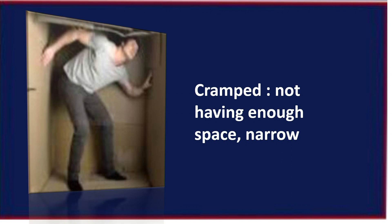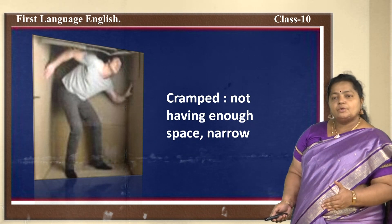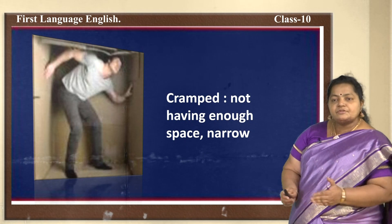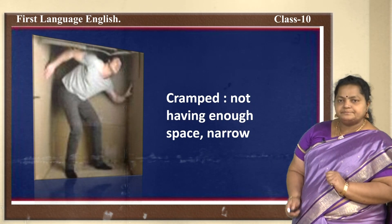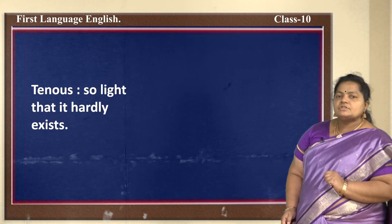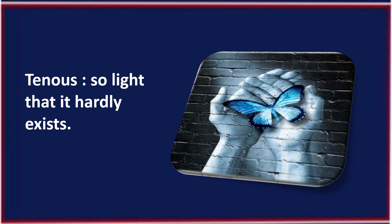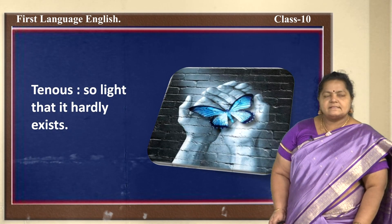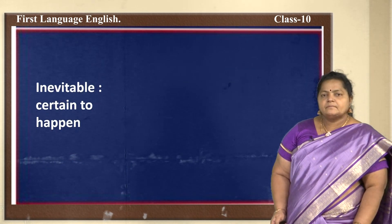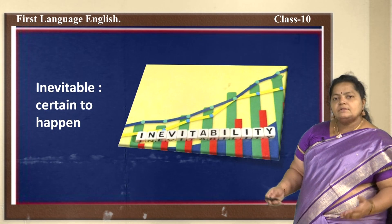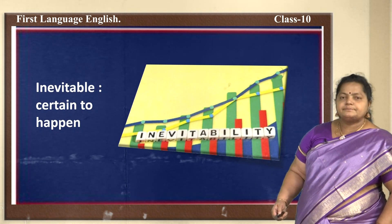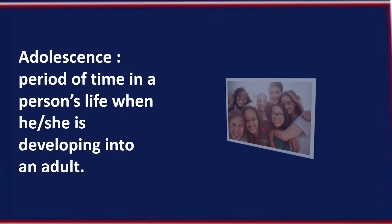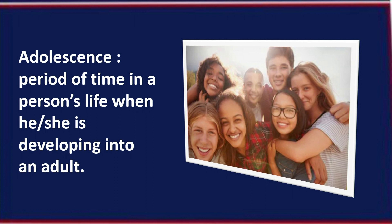'Cramped' — not having enough space; a place that is narrow or insufficient to live, sit, or stand in. 'Tenuous' — so slight, like a butterfly that hardly exists. 'Inevitable' — certain to happen; you have a guarantee or expectation that something will happen.